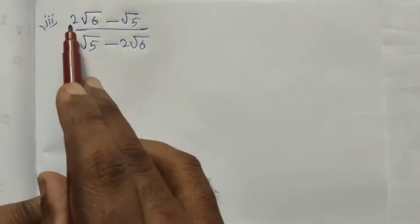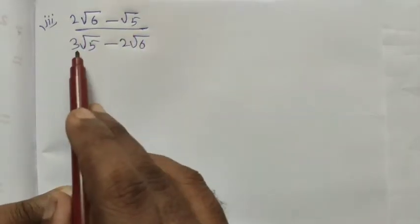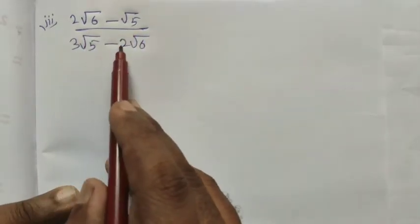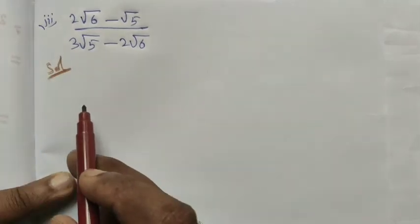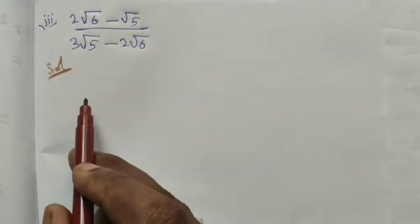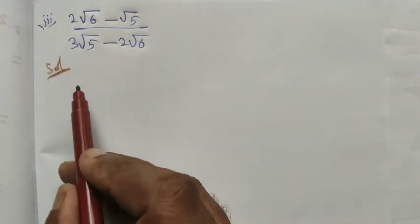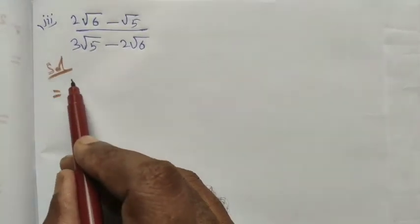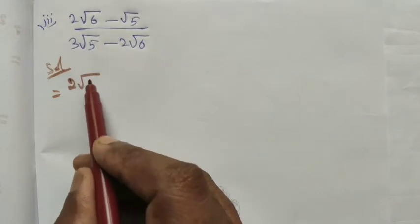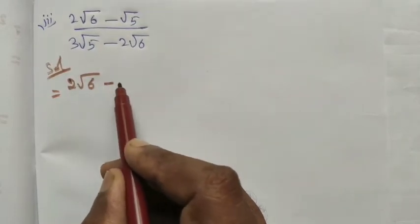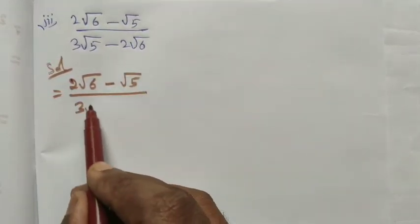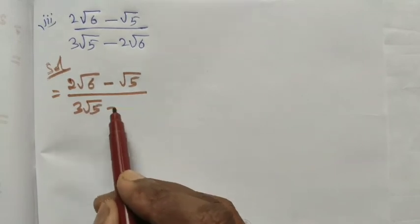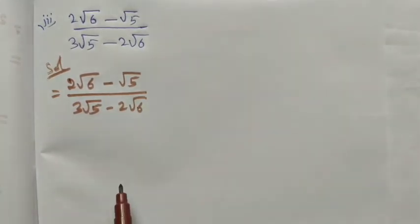Now for Roman number 3: (2√6 - √5) / (3√5 - 2√6). For the solution, we are going to take the conjugate for this number. The numerator is 2√6 - √5, divided by 3√5 - 2√6.